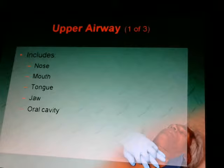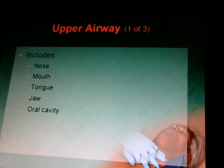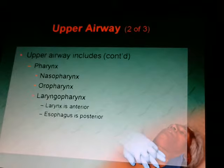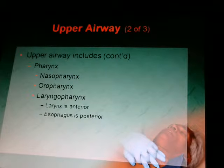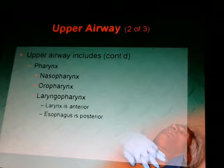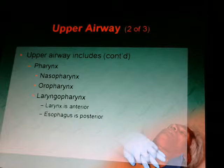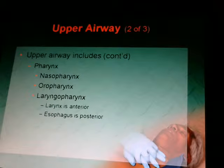The upper airway consists of the nose, the mouth, the tongue, the jaw, and the oral cavity. It also consists of the pharynx — the nasal pharynx, the oral pharynx, and the laryngeal pharynx. The larynx is anterior and the esophagus is posterior.